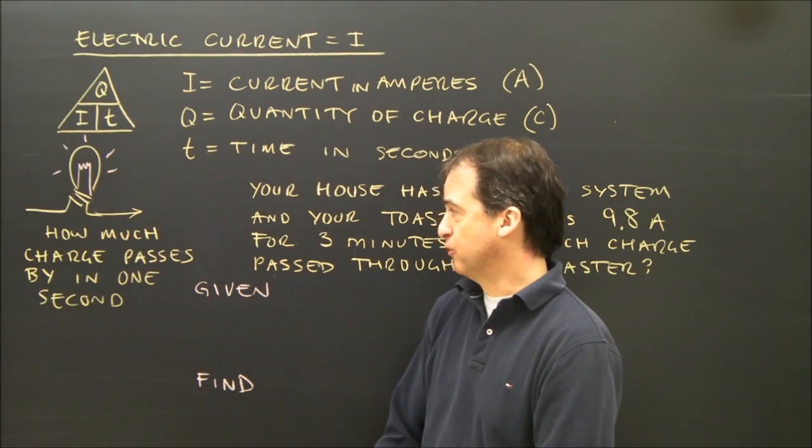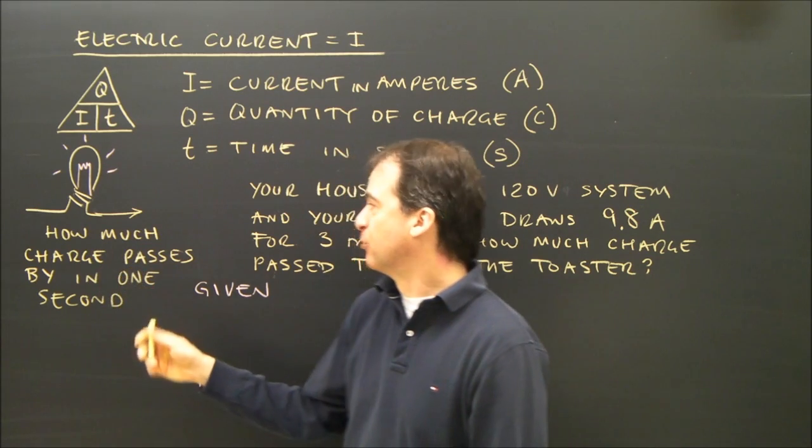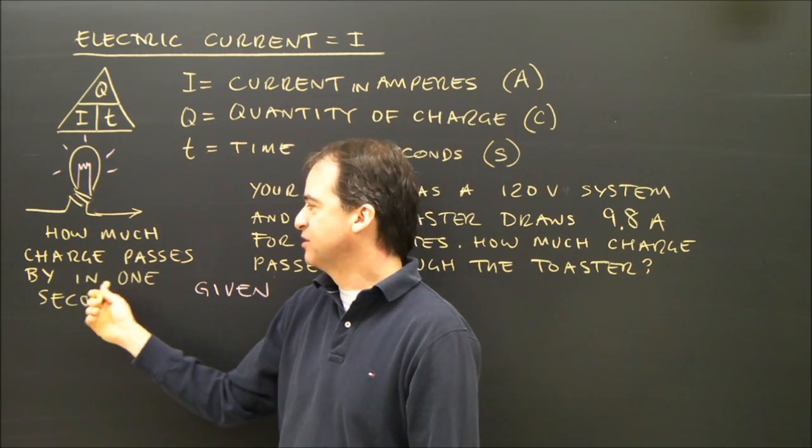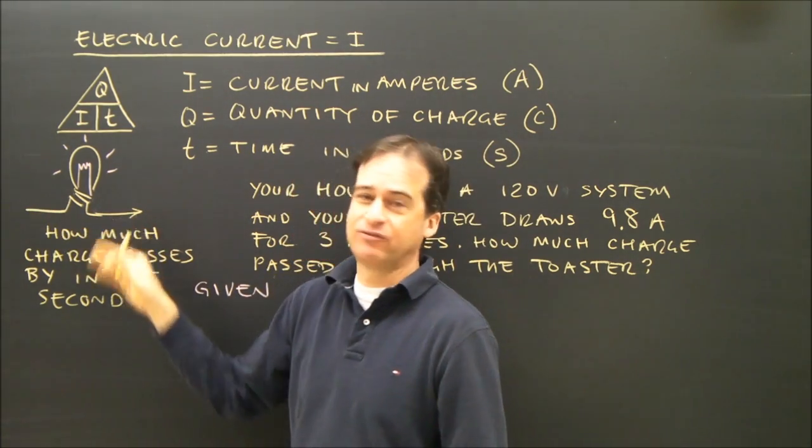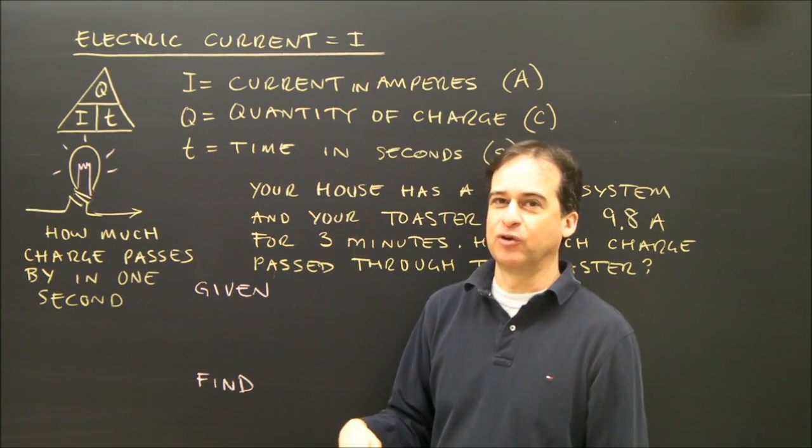Electric current is like water flow. So when we talk about current, we're really saying how much charge passes by in one second. So if you have a lot of current, then if you put a meter before or after this bulb, you're going to see a lot of current passing through.